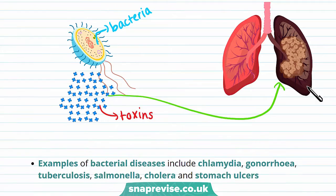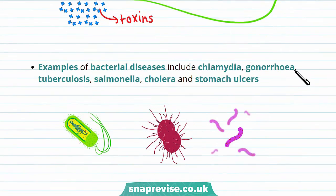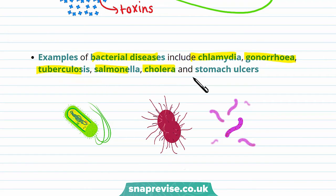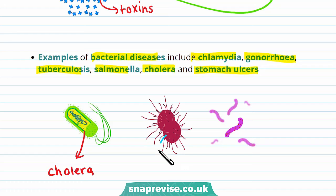Now let's look at some examples of bacterial diseases. These include chlamydia, gonorrhea, tuberculosis, salmonella, cholera, and stomach ulcers. This is the bacteria that causes cholera, this one causes gonorrhea, and this bacteria causes tuberculosis, or TB.